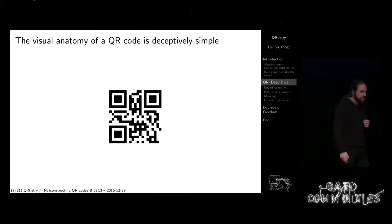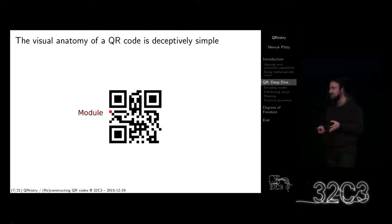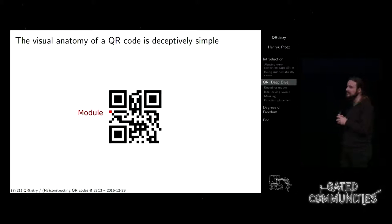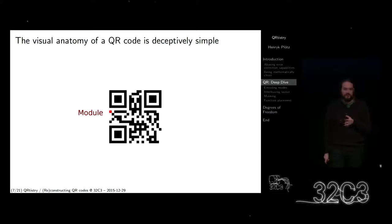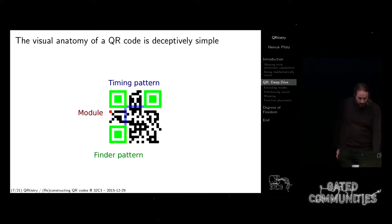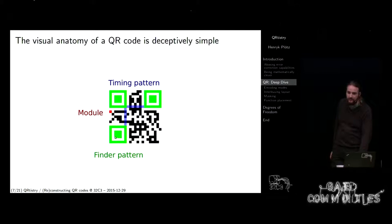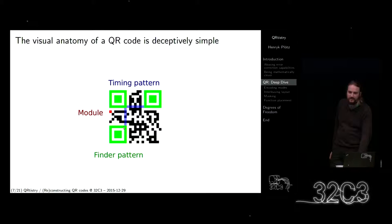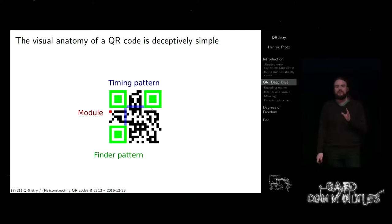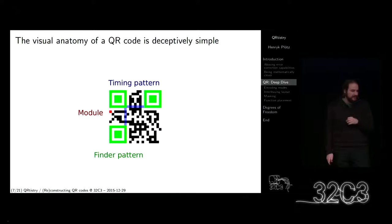Es stellt sich raus, dass ein QR-Code sehr einfach aussieht, aber eigentlich nicht so ist — das ist täuschend einfach. Das nennt man ein Modul, das ist einfach ein einzelner Pixel. Aber auch die restlichen Sachen haben eine Funktion. Diese großen Punkte in den Ecken sind die Suchpatterns — die müssen da sein, damit der QR-Code-Reader das Pattern erkennt. Und was mir vorher nicht aufgefallen ist: es gibt ein Timing-Pattern. Diese Pixel wechseln sich immer ab. Das fällt einem normalerweise nicht auf, obwohl ein Mensch eigentlich relativ gut Muster erkennen kann.